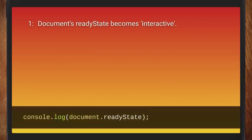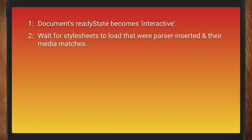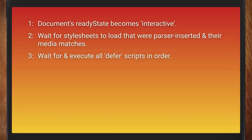I'll distill it down to the rough stuff that happens. First up, the document's ready state becomes 'interactive.' You've got document.readyState — it starts off as 'loading' and then becomes 'interactive,' and you get an event when that changes. This is an old Internet Explorer API which has since been standardized because it's quite useful. Then we wait for the style sheets to load where parts are inserted and the media matches — so not print stylesheets, just ones that apply to the actual screen.